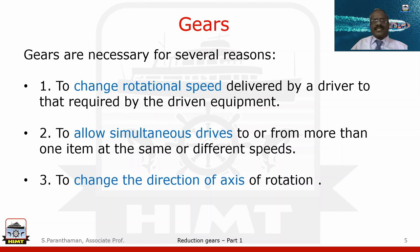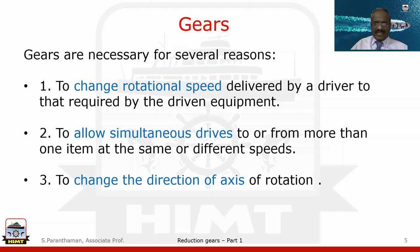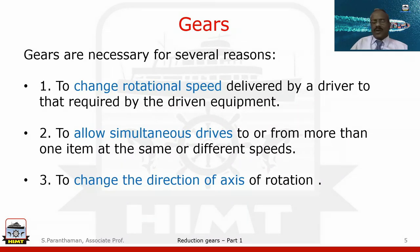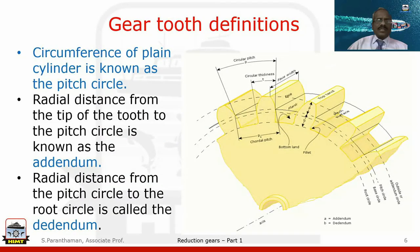Gears are also used to change the direction of axis of rotation. The axis of rotation can be changed — the drive shaft and the driven shaft can be parallel, at 90 degrees, or at any angle. The driving shaft might be running in the clockwise direction and the driven shaft in the anti-clockwise direction, so to change the direction of the shafts, gears can be used.